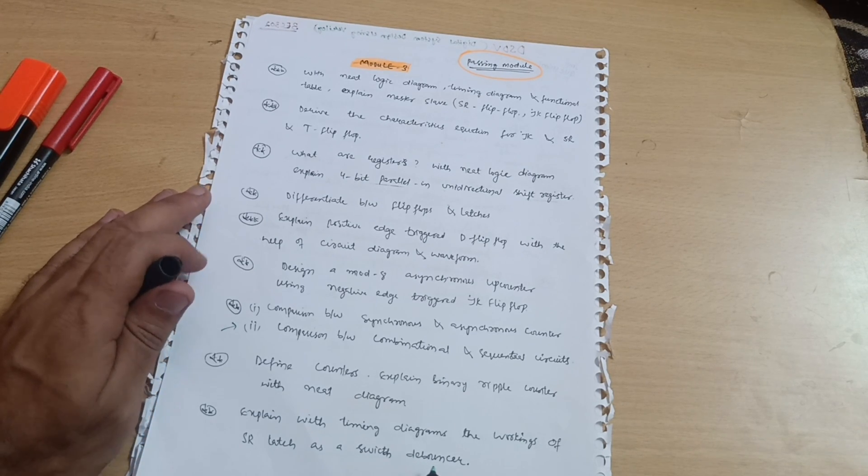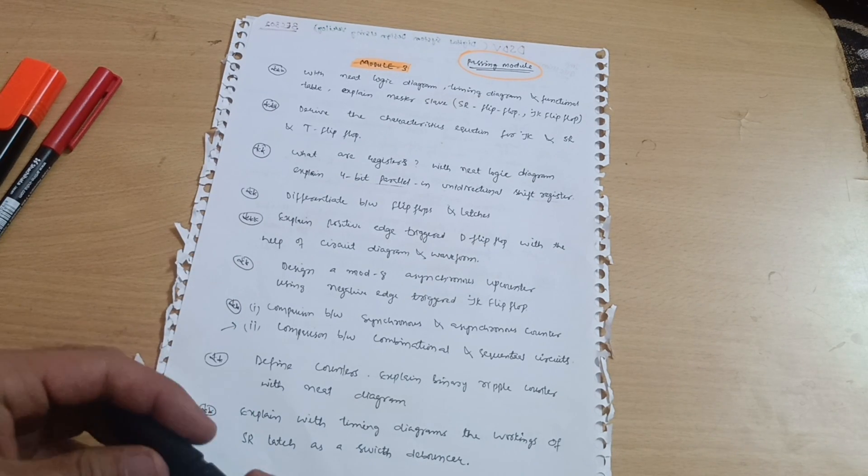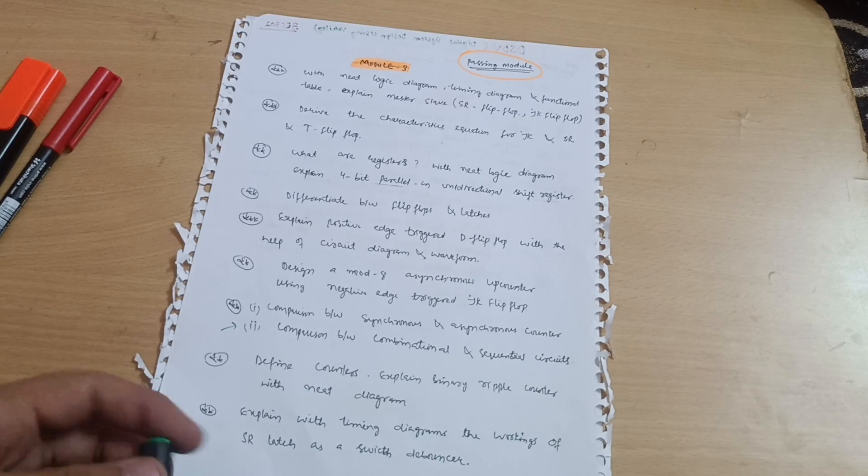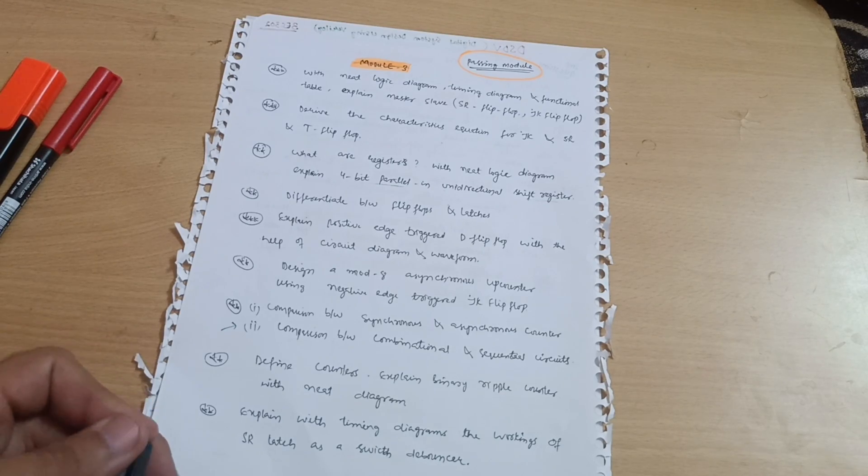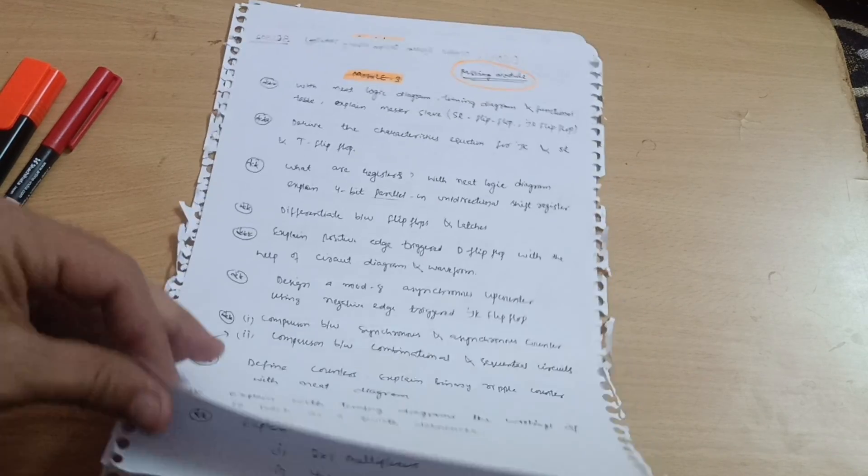Define counters. Explain binary ripple counter with neat diagram. Explain with timing diagrams the working of SR latch as a switch debouncer. This is all about module third and it is a passing module. You should cover these portions at least from this module.